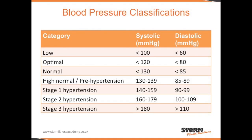This table represents blood pressure classifications. When somebody has their blood pressure checked, the result can be categorised as low, optimal, normal, high normal or pre-hypertension, stage 1 hypertension, stage 2 hypertension, or stage 3 hypertension.